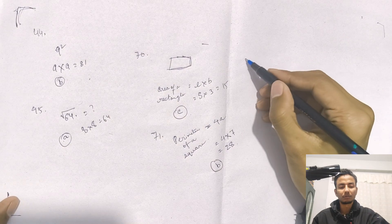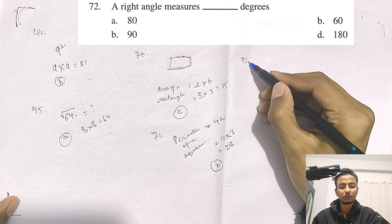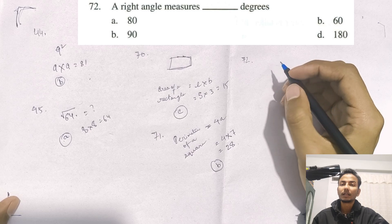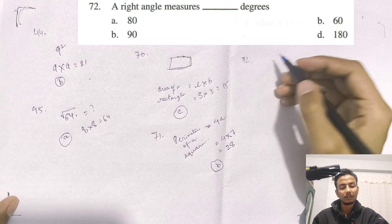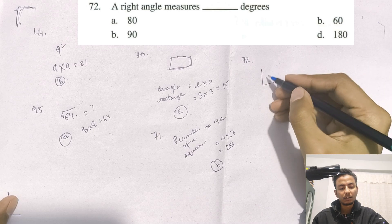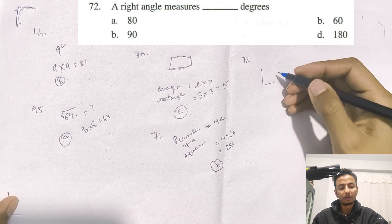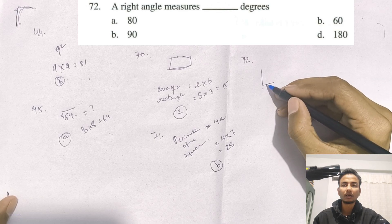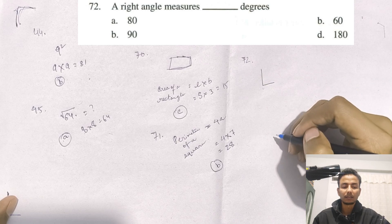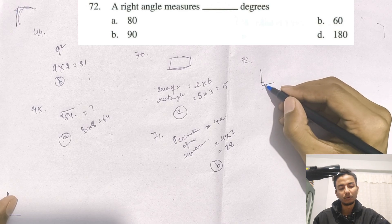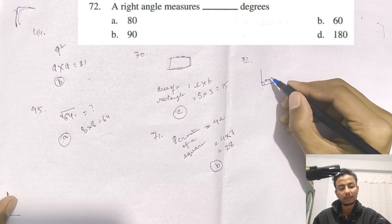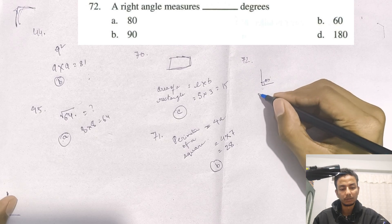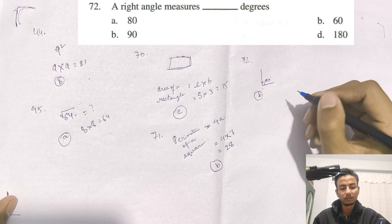Question number 72: A right angle measures how many degrees? The angle of a square or rectangle is always 90 degrees. So the answer is B for question 72.